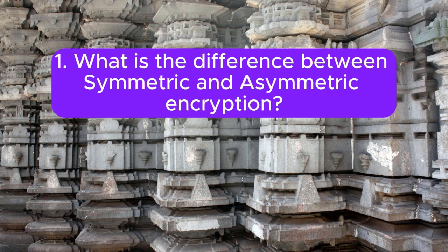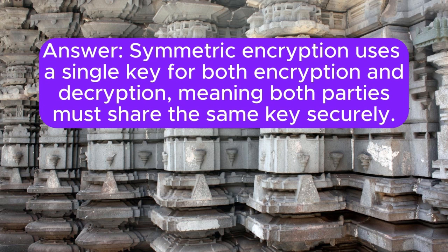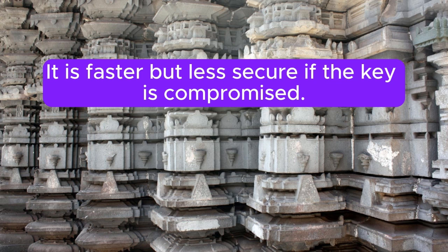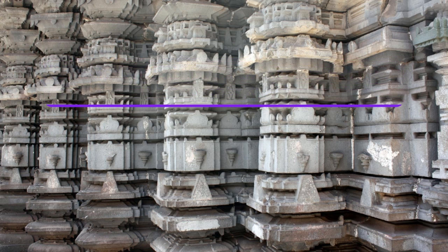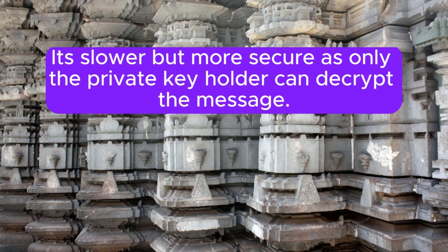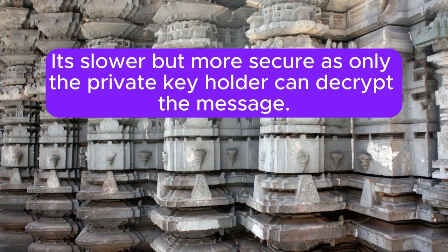1. What is the difference between symmetric and asymmetric encryption? Symmetric encryption uses a single key for both encryption and decryption, meaning both parties must share the same key securely. It is faster but less secure if the key is compromised. Asymmetric encryption uses a pair of keys: a public key for encryption and a private key for decryption. It's slower but more secure, as only the private key holder can decrypt the message.